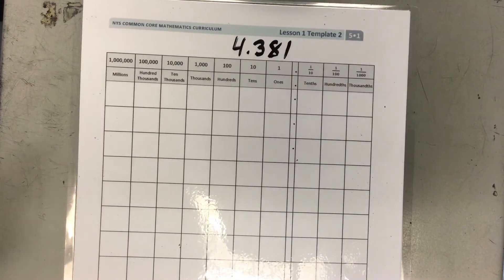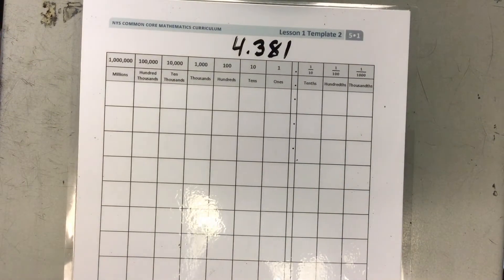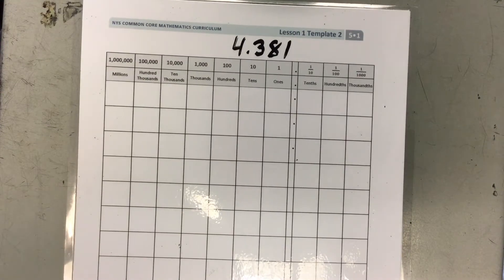For our next example, we're going to look at this number. Go ahead and give a shot naming this number. This is 4 and 381 thousandths.